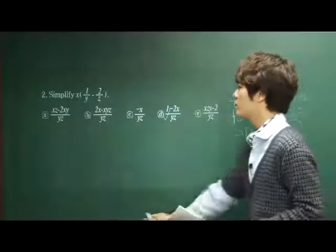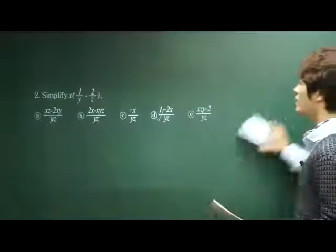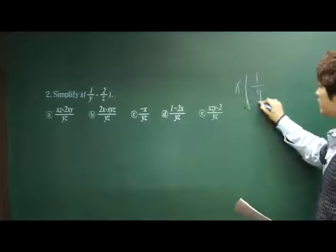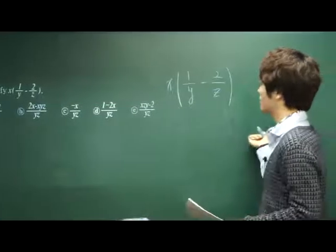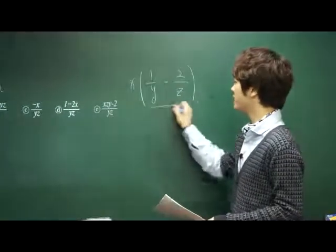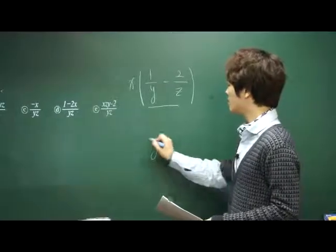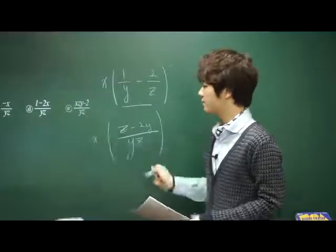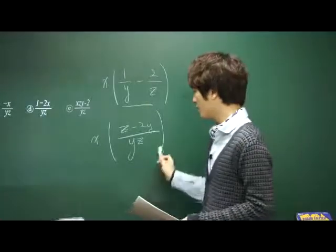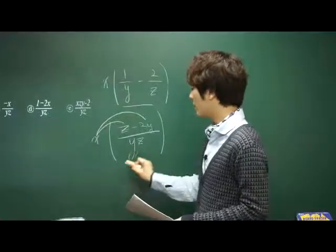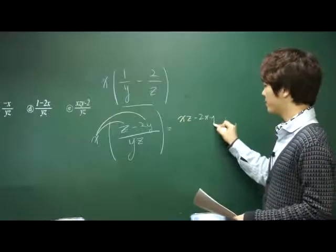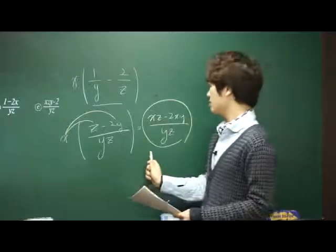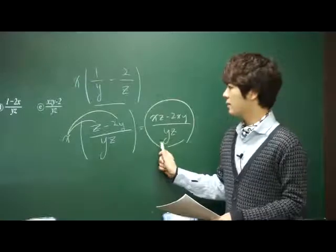Number 2: simplify. We are given some function with variables x, y, and z. Let's simplify this. It becomes y times z over z minus 2y, times x. If we do this, we will get xz minus 2xy over the multiplication of yz.